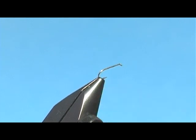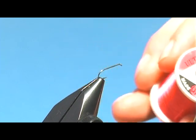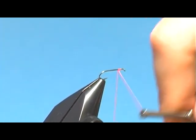So I've got a TMC100 hook in here, and I'm going to be using some UTC 70 Denier Fire Fluorescent Orange. I'm just going to tie in the thread here, go to about midpoint.